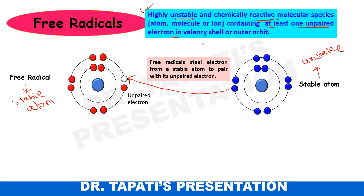Another way, this free radical can donate its unpaired electron to a stable atom. In that case also, the stable atom can be converted to unstable, and the free radical is converted to a stable atom.